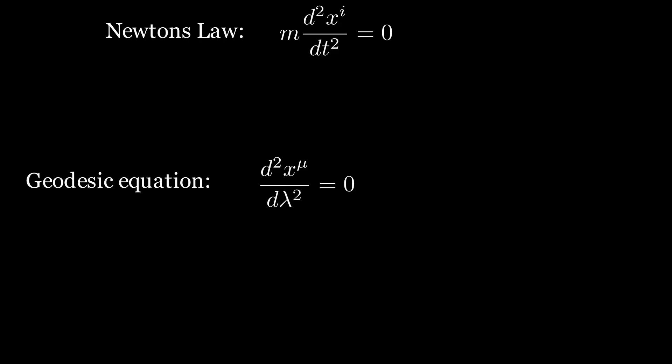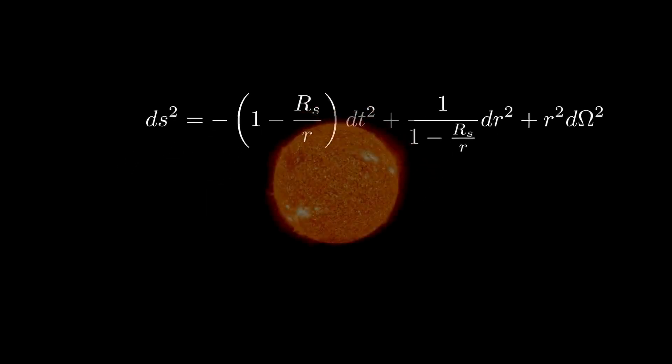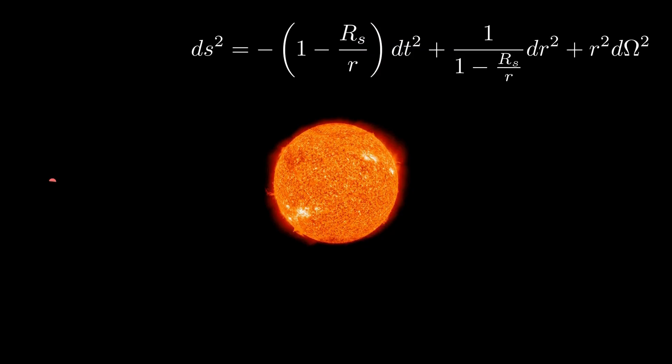Now we will put the geodesic equation to work by examining the path of the planet Mercury around the Sun. For that, we need to use the full geodesic equation. We also need to use the Schwarzschild metric. We discussed this in more detail in the previous video. In short, it is the line element around an uncharged, non-rotating, spherical body. The Sun is rotating and is not perfectly spherical, but this should not matter too much.